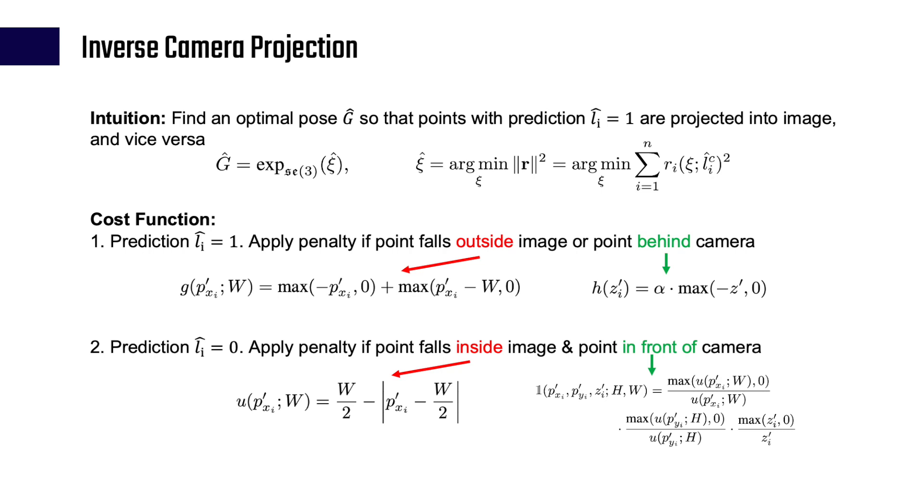With the Frustum classification, for each point, we know whether it falls in the image or not. Now we have to solve the second problem: how can we estimate the relative pose with that information? We formulate the problem as a traditional optimization problem. The cost function consists of two parts. Please refer to our paper for detailed explanation.